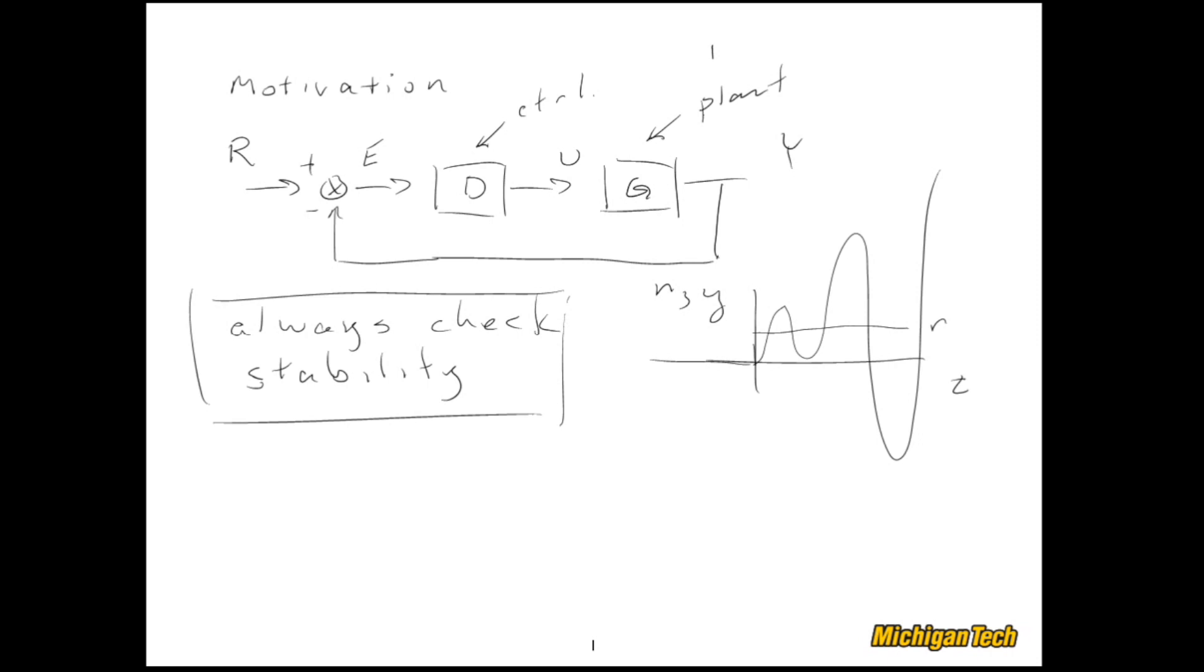We need some definitions of what stability is, and then we also need some ways to check it. So the kind of stability that we're going to look at here is called BIBO stability, and this stands for bounded input, bounded output. The concept's pretty straightforward—it just says that a system has this feature, BIBO stability, if for all bounded inputs, any bounded input, the output will be bounded.